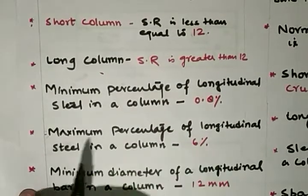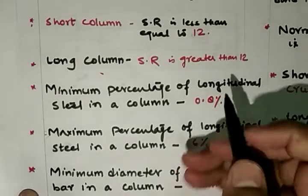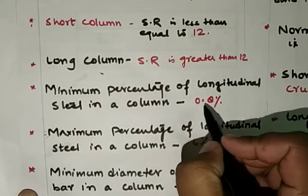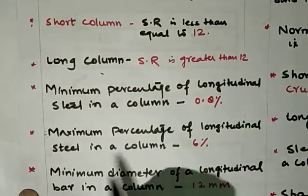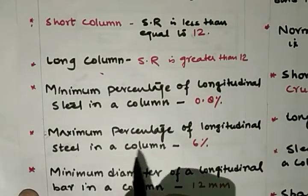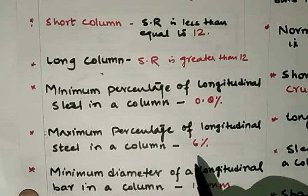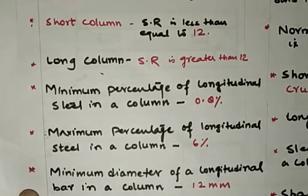The minimum percentage of longitudinal steel in a column is 0.8 percent of the gross cross-sectional area. The maximum percentage of longitudinal steel in a column is 6 percent of the gross cross-sectional area.